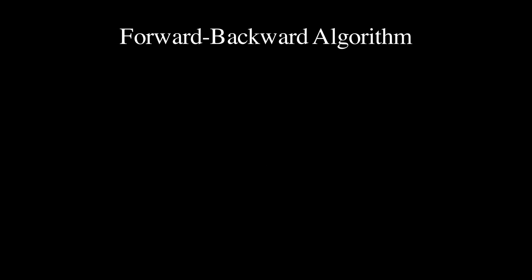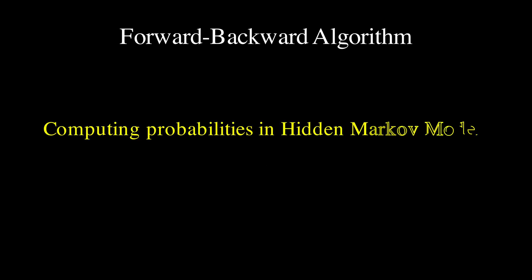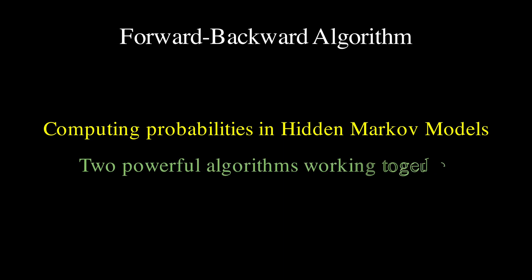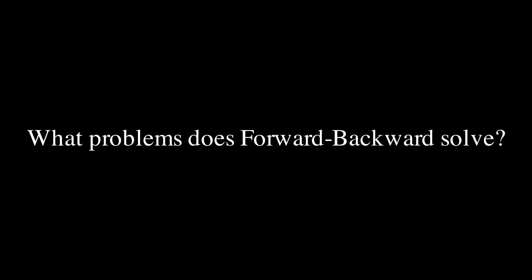This algorithm solves a different problem than what we have seen before with the Viterbi algorithm. Remember that in the last video, we used Viterbi to find the most likely sequence of hidden states given our observations, but sometimes we don't just want a single best path, and instead we want to know the probability of being in each state at each time point. That's exactly what the forward-backward algorithm gives us.